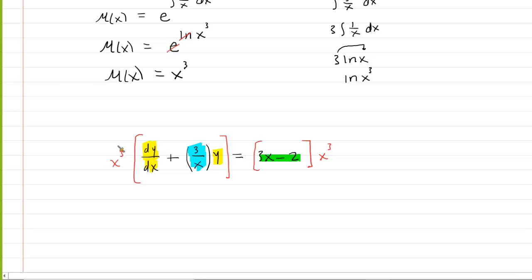We don't need to, but as an instructive exercise, we're going to distribute the x cubed. So you would have x³ dy/dx plus you're going to have 3x³ over x when you distribute it to that term. That simplifies, of course, to just 3x². And then that's multiplied by y. Over on the other side, we may as well distribute this x cubed as well. So you're going to have 3x to the power of 4 minus 2x cubed.